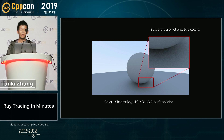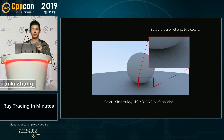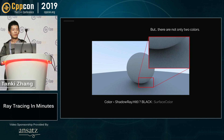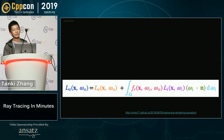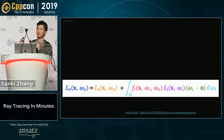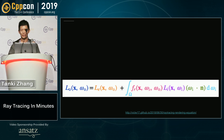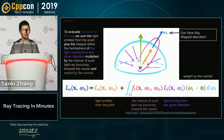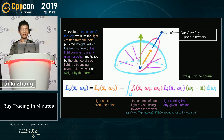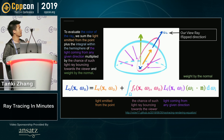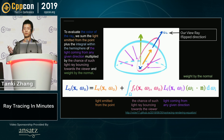Yes, because I was only telling part of the story — it's not as simple as that. We need to evaluate the light information of the surface, and that's only part of the equation. This is what we actually try to deal with. To evaluate the color of a ray, we need to sum up the light emitted from the point, plus the integral within the hemisphere of the light coming from any given direction, multiplied by the chance of that light ray bouncing toward the viewer, and weighted by the normal. This is what we call the rendering equation, which is what all renderers try to solve.